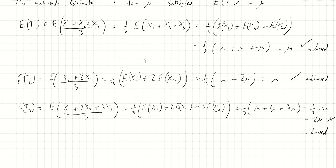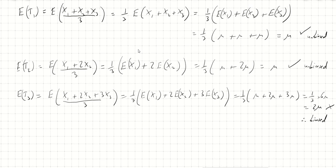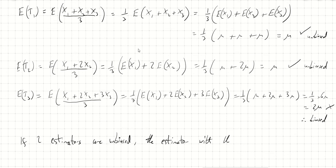So let's look at the two that were unbiased: T1 and T2. Here's the idea: if two estimators are both unbiased, the estimator with the lower variance is more efficient. The lower the variance, the more efficient an estimator is. If an estimator actually minimizes the variance, it's just called efficient. So the one with the lower variance is more efficient and is generally preferred.